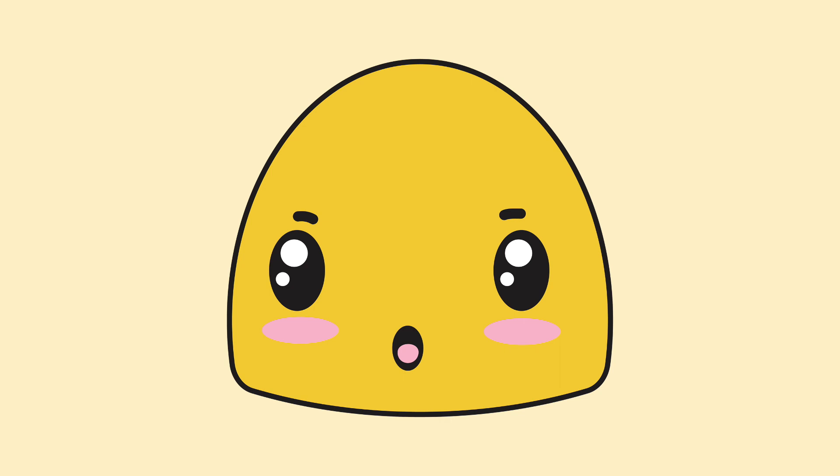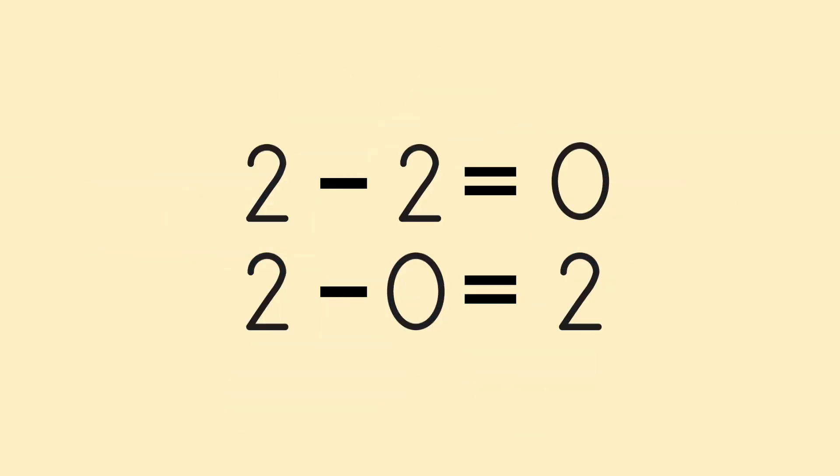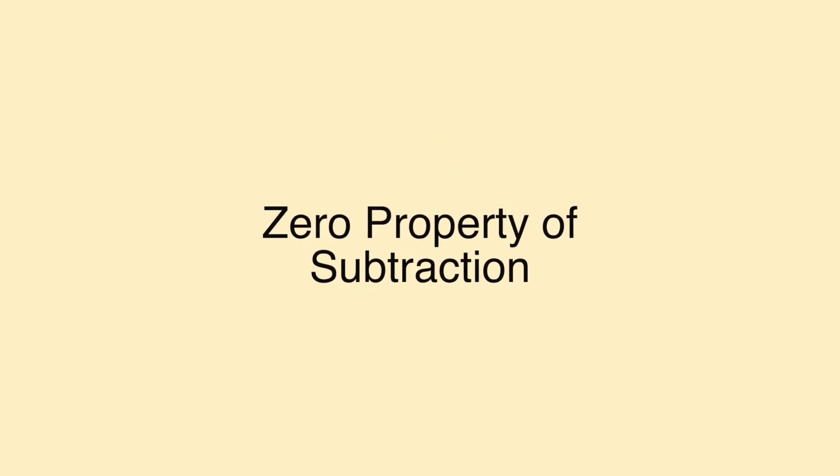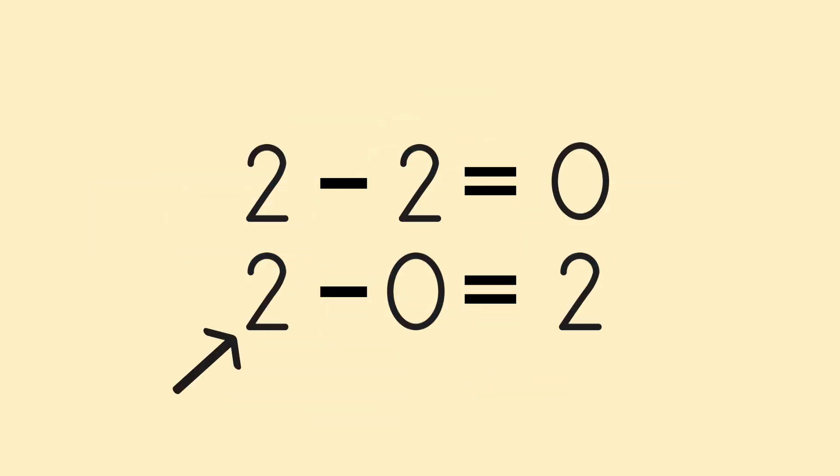And my goodness, subtraction had a few more surprises. Any number minus itself always equals 0. This is the 0 property of subtraction. And any number minus 0 stays the same. This is the identity property of subtraction.